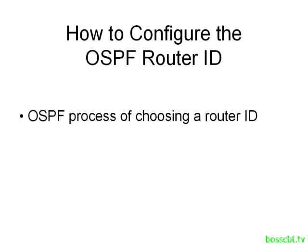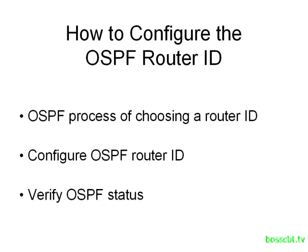So what we're going to cover is: first, we need to understand the process of OSPF choosing a router ID — it's pretty simple, but if you don't know it you're kind of stuck. After that, we'll show you how to manually configure the OSPF router ID, and then we'll take a look at a few verification commands to confirm that the ID has been configured the way we wanted it to be.